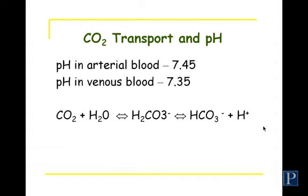If someone hypoventilates — due to brainstem injury or drugs that suppress breathing — the reverse happens: carbon dioxide is retained, the reaction runs left to right, hydrogen ions accumulate, blood pH decreases, and this can lead to respiratory acidosis. Additionally, metabolic disturbances such as uncontrolled diabetes can cause excess ketone body production; since ketone bodies are weak acids that dissociate at physiologic pH, they release hydrogen ions, leading to metabolic acidosis.